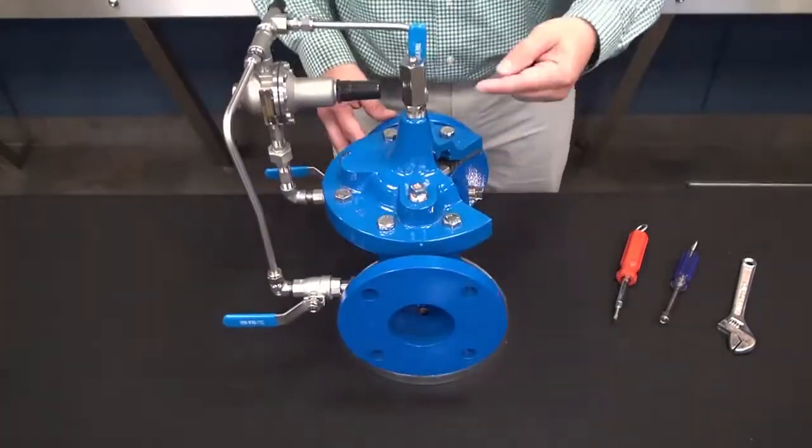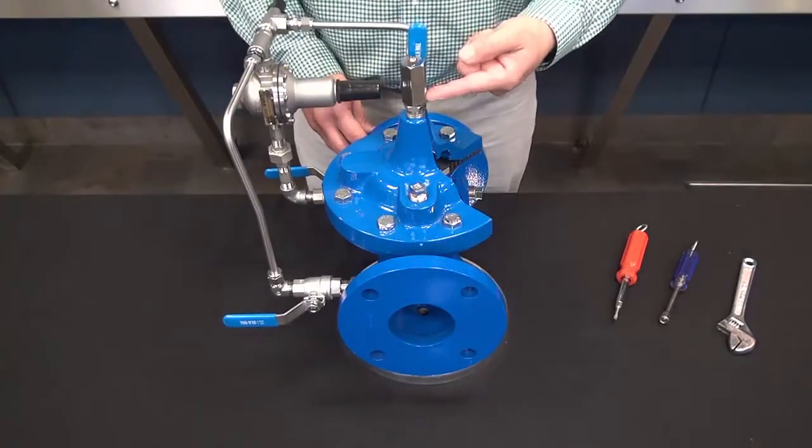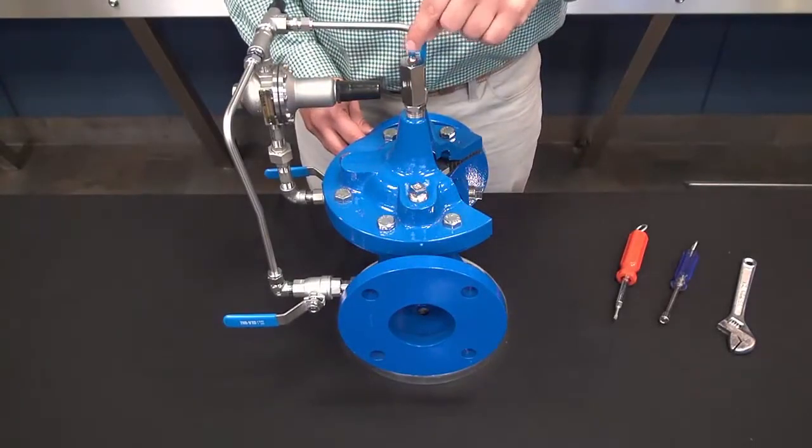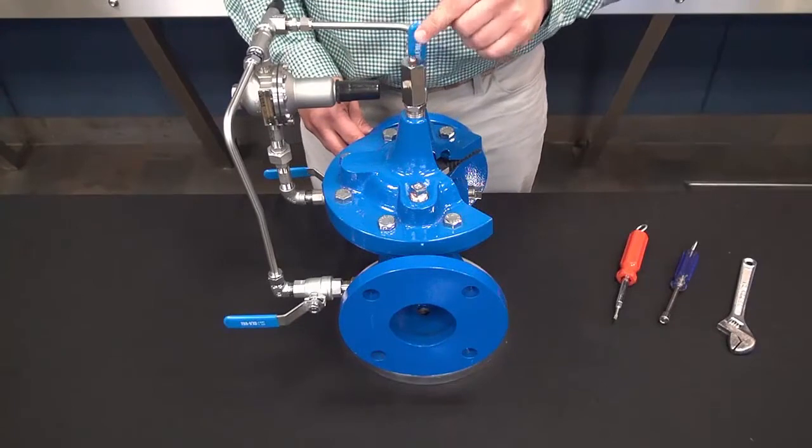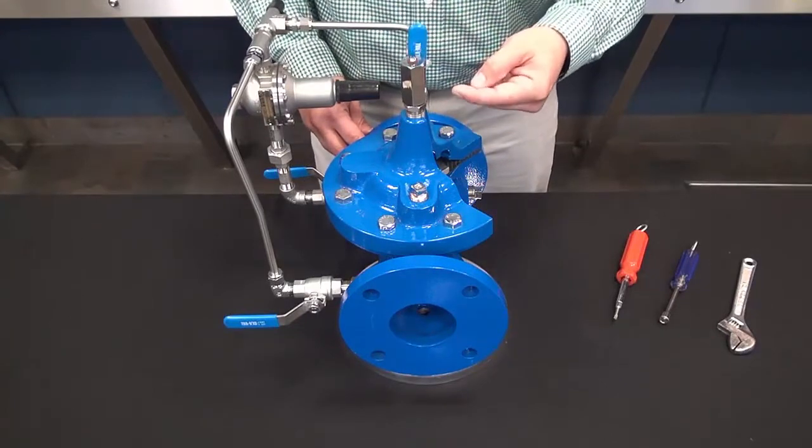In this case here, with this valve, we have an X-101 position indicator. We can loosen the wing nut that's on top here until you have a steady flow of water.